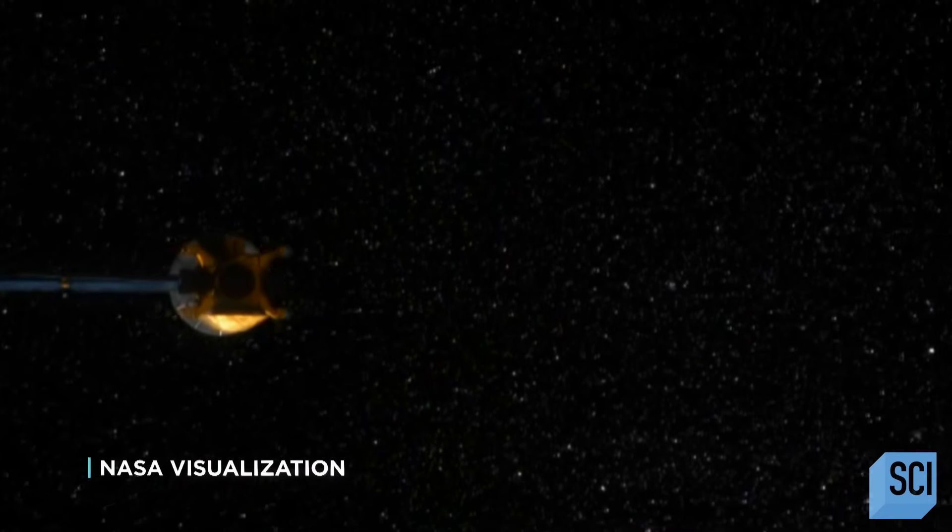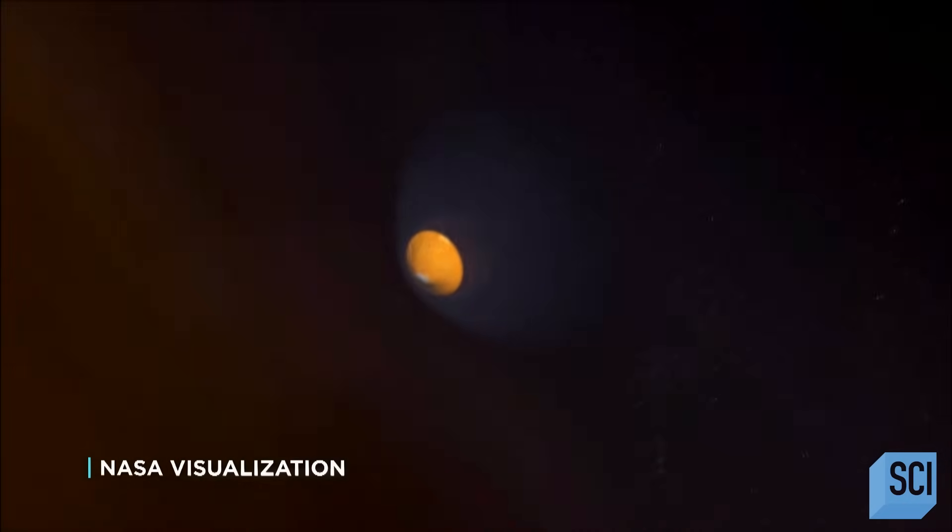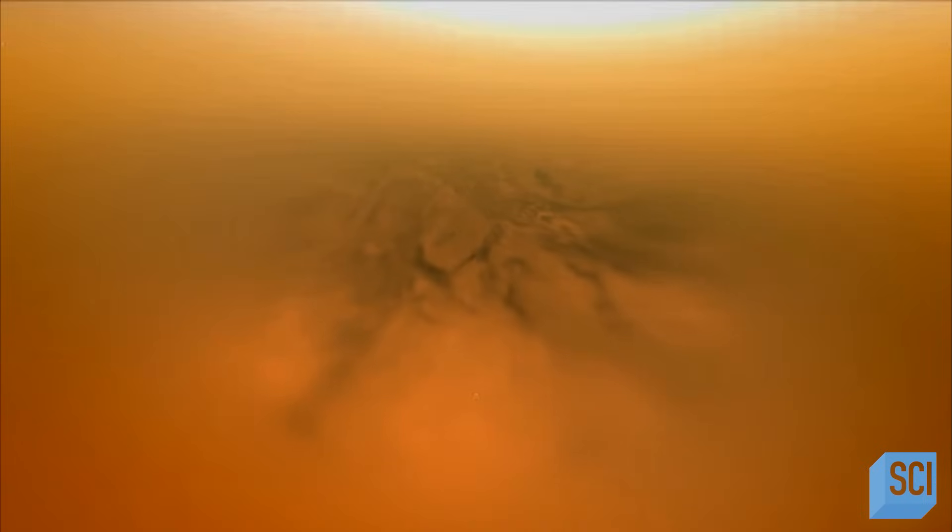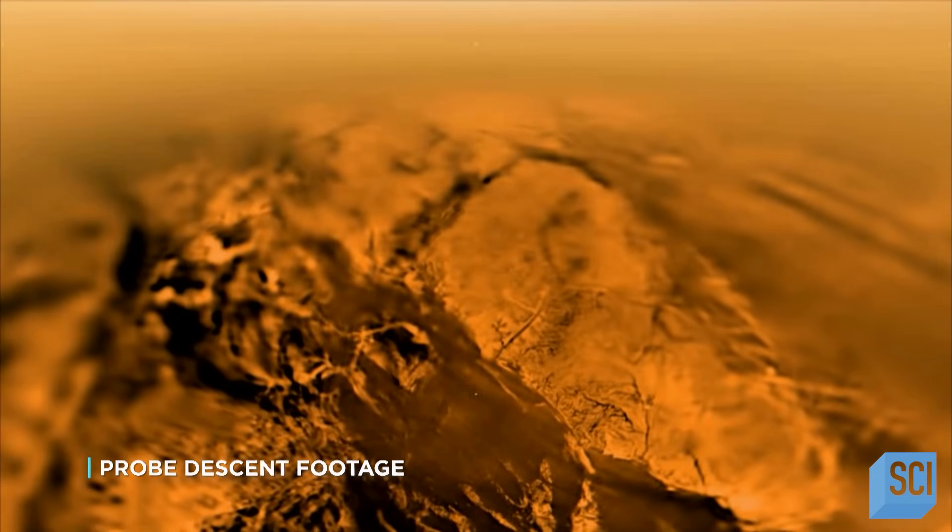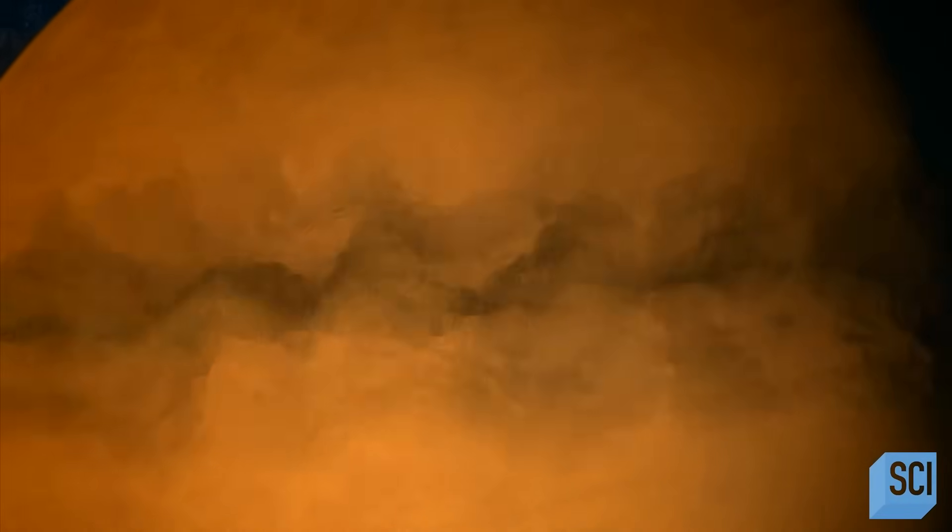In 2005, scientists landed the Huygens probe on the surface of the moon. The images it beamed back showed totally unexpected geographical features. The probe revealed a secret beneath Titan's thick orange atmosphere, something exceedingly rare in our solar system.